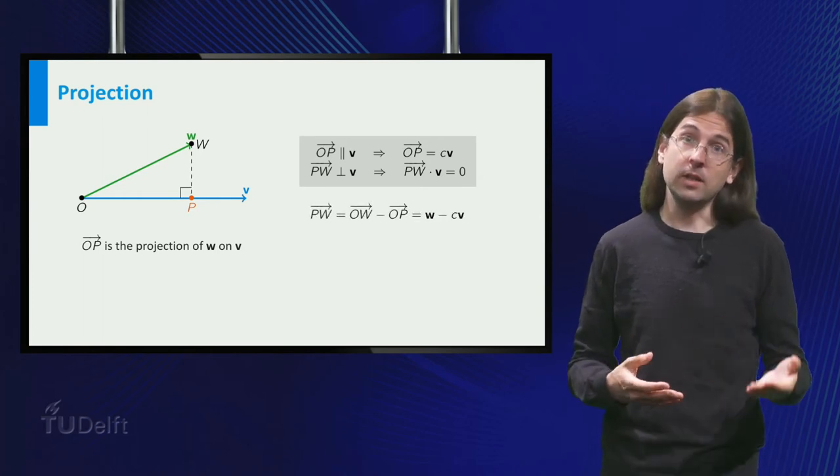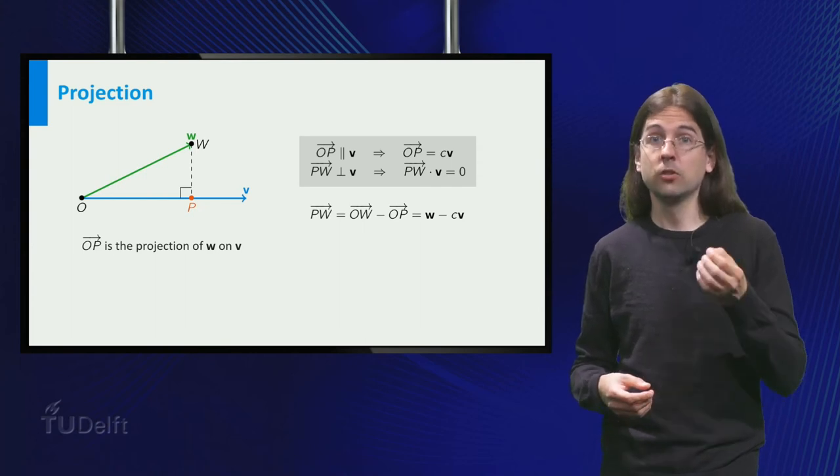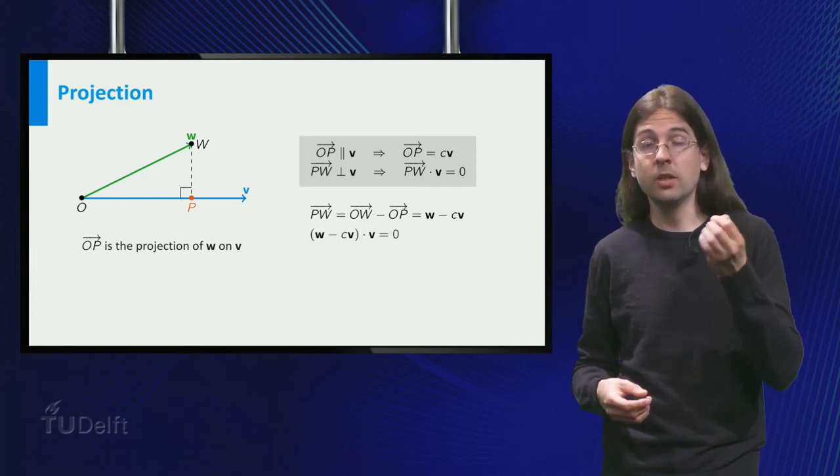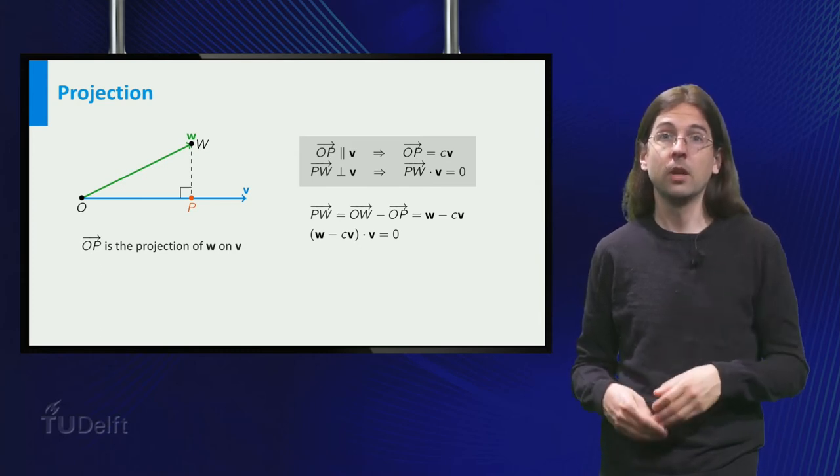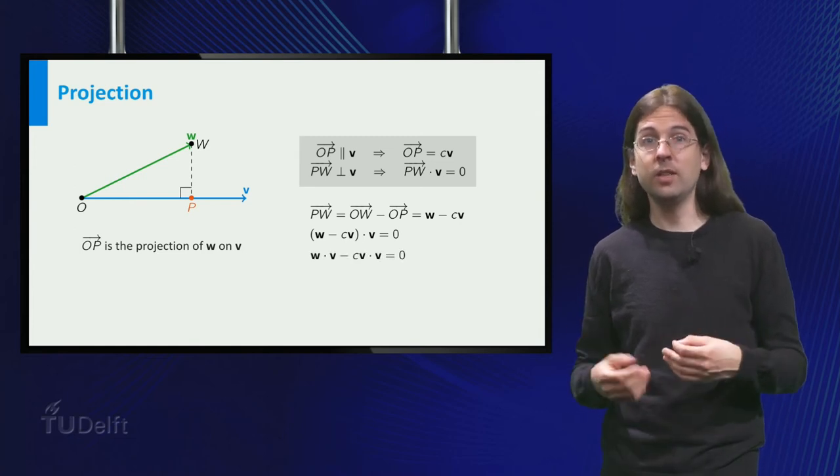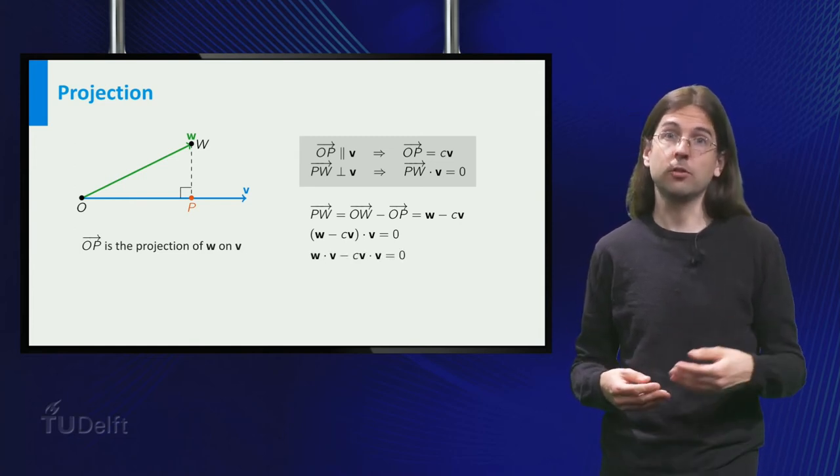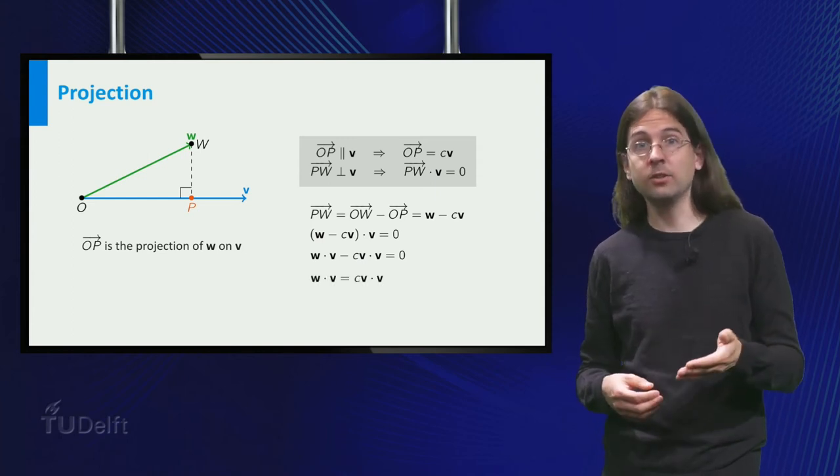Now the vector pw equals w minus op, so we obtain the equation w minus cv dot product v equals 0. This expands to w dot v minus c times v dot v equals 0.